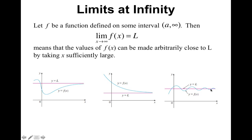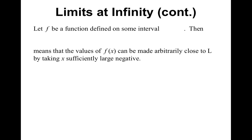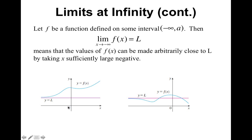This one kind of looks funny — it is okay to cross horizontal asymptotes; it's not okay to cross vertical asymptotes. As x is getting really, really large, the oscillating is getting really small, and eventually it will approach the horizontal asymptote y equals L. We can also say that a function can be defined on some interval from negative infinity to some number a. Then the limit as x approaches negative infinity of f of x equals L, meaning the values of f of x can be arbitrarily close to L by taking x sufficiently large negatively. As x gets very, very large towards the negative side, the graph approaches the horizontal asymptote y equals L.